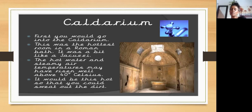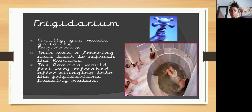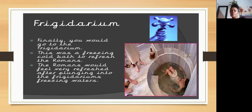Those of you who are a little older will be able to go into a jacuzzi, steam room, or sauna — places where you can get really hot and sweaty and your skin gets a good clean. Finally, you would go to the frigidarium. This was a freezing cold bath to refresh the Romans. The Romans would feel very refreshed after plunging into the freezing water. So those are the different types of Roman baths.